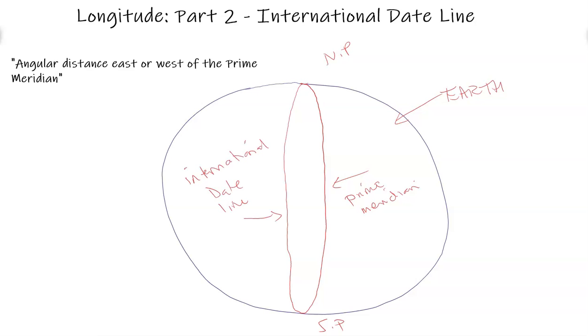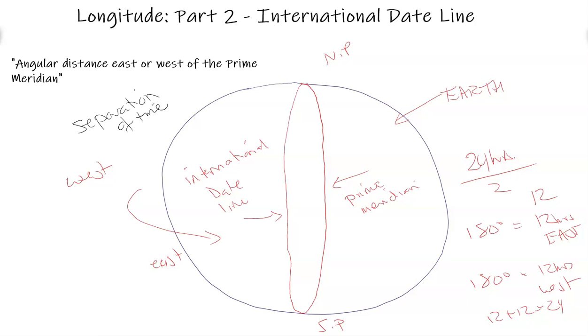So very simply, we have 24 hours in the day, rounded up, obviously divided by 2, which is 2 halves of the circle, which is 180 degrees, by 2 is 12. So 180 degrees is 12 hours, let's say, to the east, and 180 degrees and 12 hours to the west, because 12 plus 12 equals 24 the whole day. So as the Earth spins from west to east, kind of clockwise, what's going to happen is you're going to have the Sun rise and set. But as the Earth spins, the international dateline is the separation of time between calendar days.